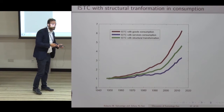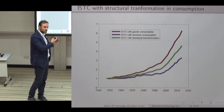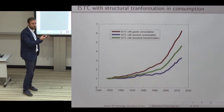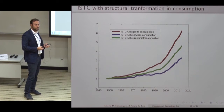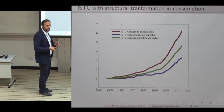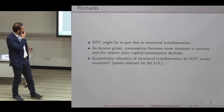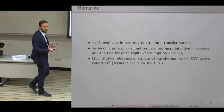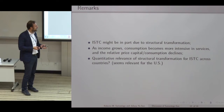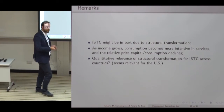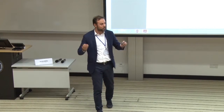My question is: you consider several factors for investment-specific technological change across countries, but you don't consider consumption composition. It looks to me that this could be pretty important — even for the U.S. It's not considered in the original paper by Greenwood and co-authors, but maybe if you adjust for consumption composition, this contribution to growth is not as important as they find. Maybe this is another paper, or maybe you can have an extension, but I think it's important to really understand what we mean by investment-specific technological change — maybe it's just structural transformation at play.